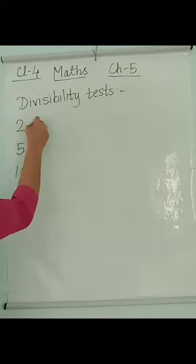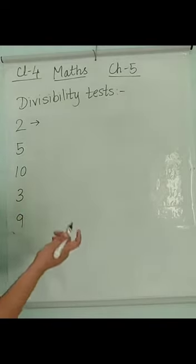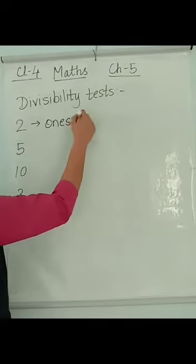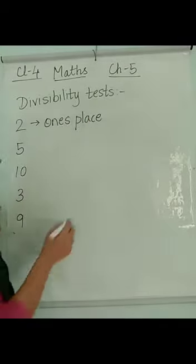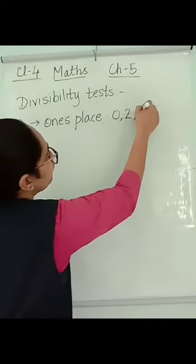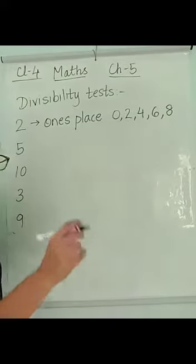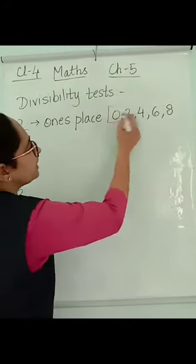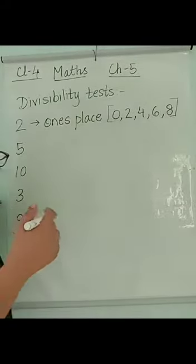For the number 2, when I want to check the divisibility by 2, I have to check the ones place. The ones place, the number in that place, you have to check. If it is 0, 2, 4, 6 or 8, then it is divisible by 2. That number will be divisible by 2.